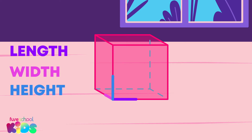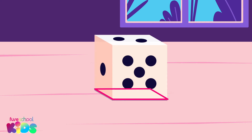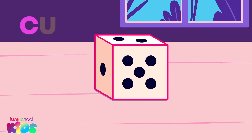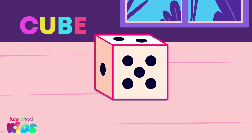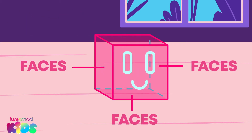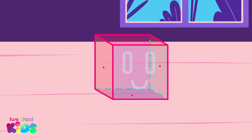It is 3D! 3D shapes are three-dimensional because they have three dimensions: length, width, and height. 3D shapes are not flat. My dice are a 3D shape called a cube — say it with me: cube! The sides of a 3D shape are called faces.